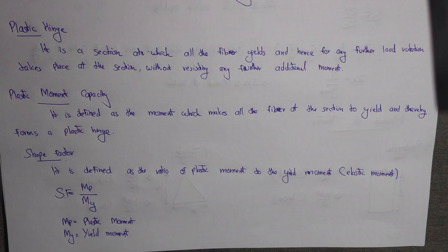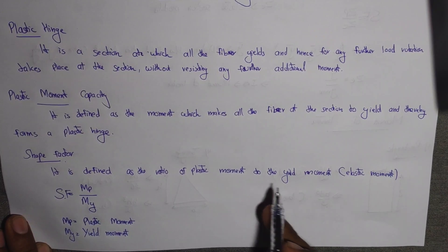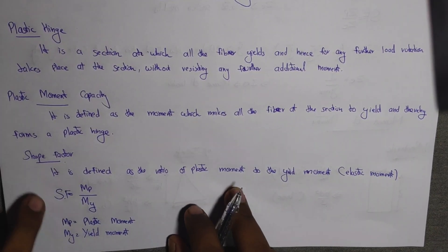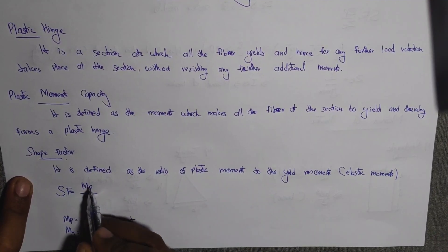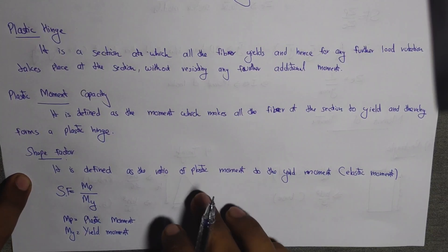The next heading is Shape Factor. It is defined as the ratio of Plastic Moment to the Yield Moment. Yield Moment means elastic moment. Shape Factor Sf equals Mp divided by My, where Mp is plastic moment and My is yield moment.